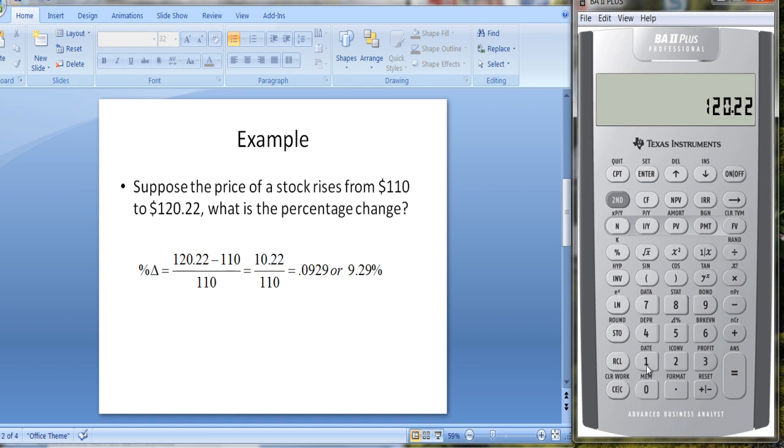and divide it by $110, then subtract 1 from it. We get the same answer, 0.0929.